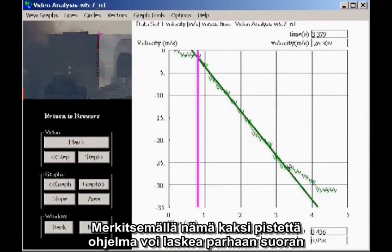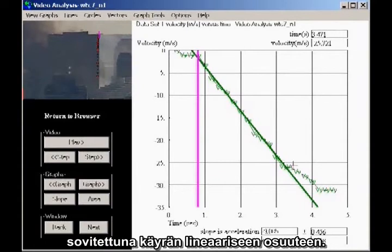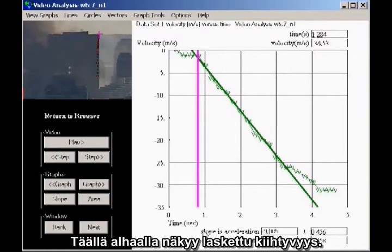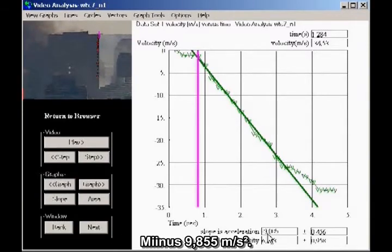By marking two data points, the program can compute the best straight line to fit the data for the linear portion of the graph. The slope of the line is the acceleration. Down here at the bottom, the computed acceleration is shown, minus 9.885 meters per second squared.